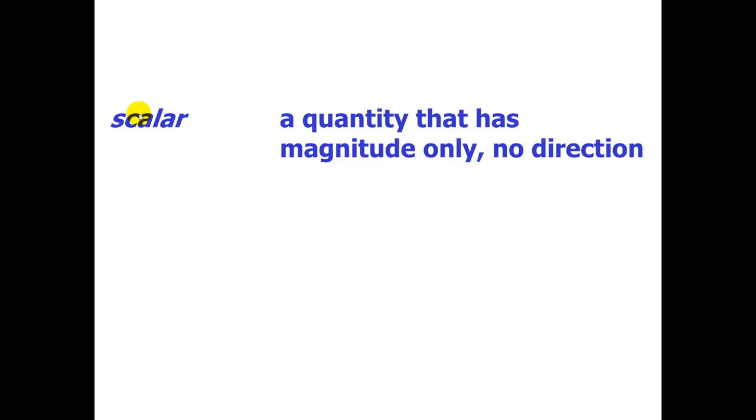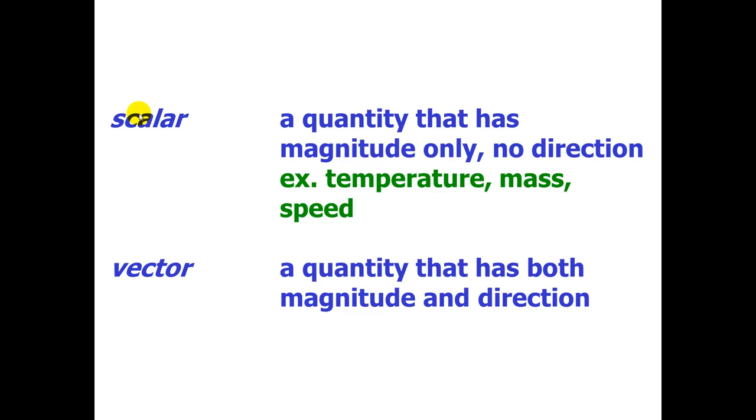So here, first, scalar versus vector. A scalar is a quantity that has magnitude only, no direction. For example, temperature, mass, and speed. Another word for saying magnitude is scale, and that's where the word scalar comes from. A vector, on the other hand, is a quantity that has both magnitude and direction. So, force, you push or pull in a certain direction. Velocity, you are traveling in a certain direction. And acceleration, your velocity is changing in a certain direction.